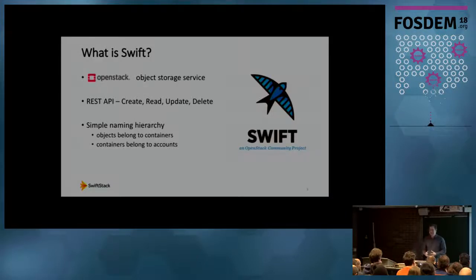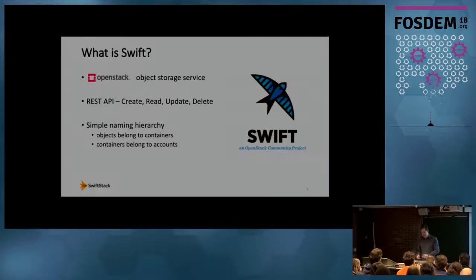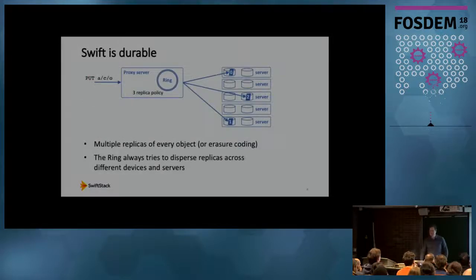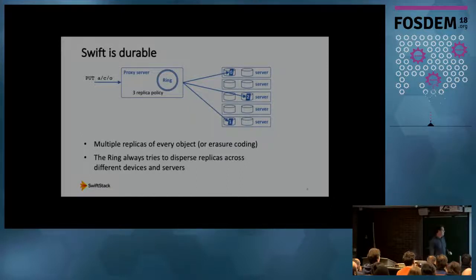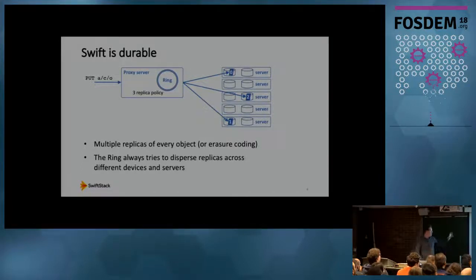It's important to understand Swift is not a file system and it's definitely not a block storage system. It does have a very simple naming hierarchy: objects belong to containers and containers belong to accounts. We have an HTTP PUT request putting an object to a URL — that's the account, container, object name structure.